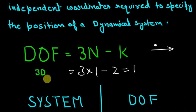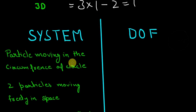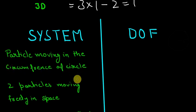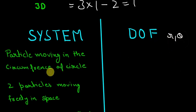Now let us find the degree of freedom for different kinds of systems. For a particle moving on the circumference of a circle, we use plane polar coordinates with coordinates r and theta. Since r is fixed because the particle moves on the circumference, there is only one coordinate — theta. So the degree of freedom is one.